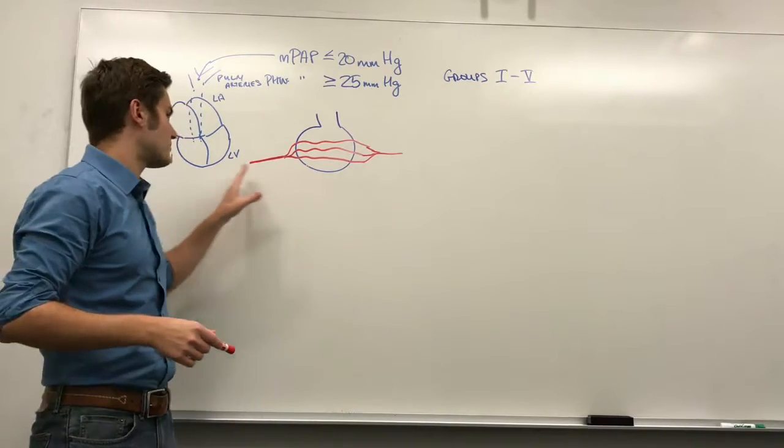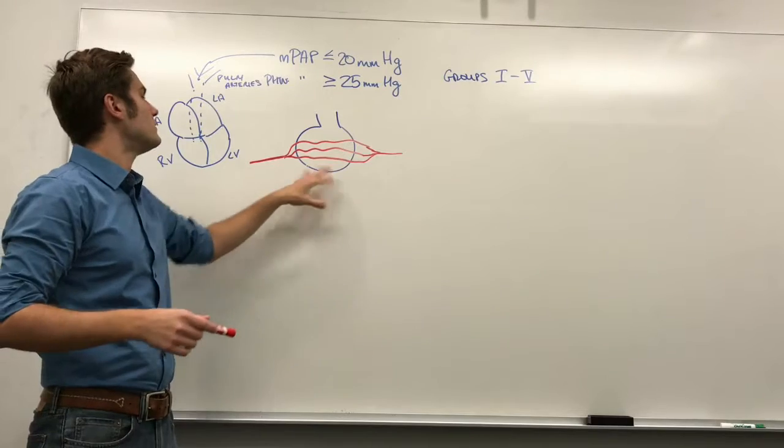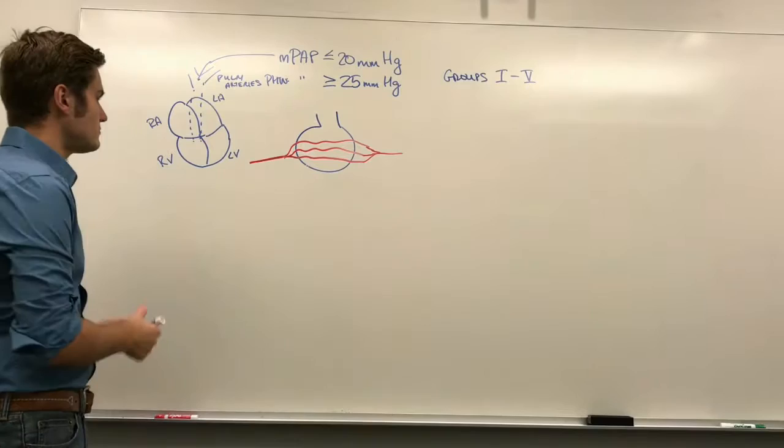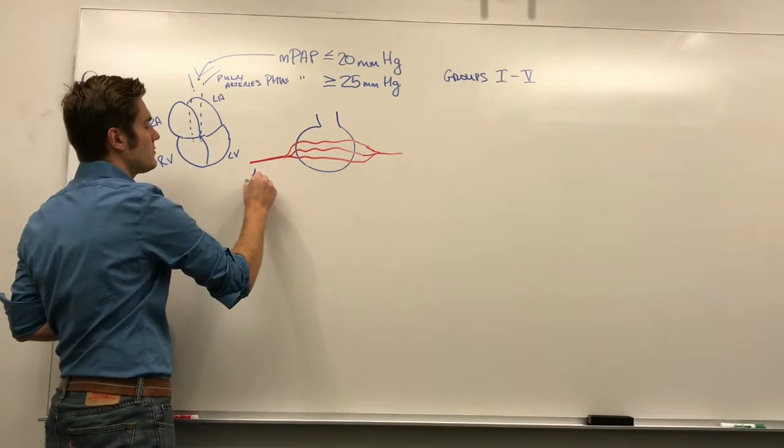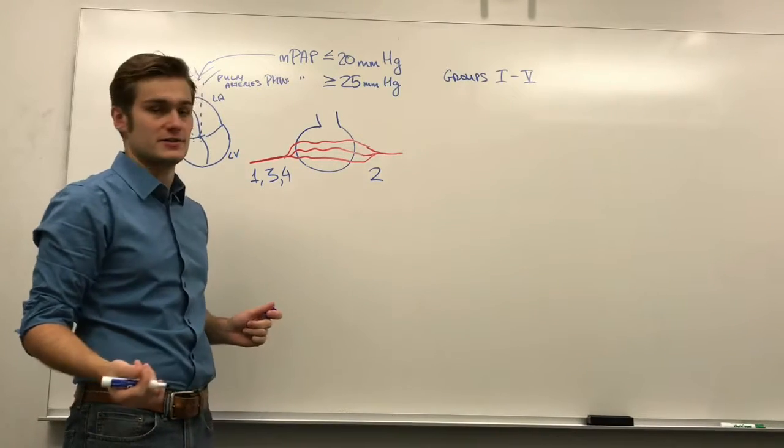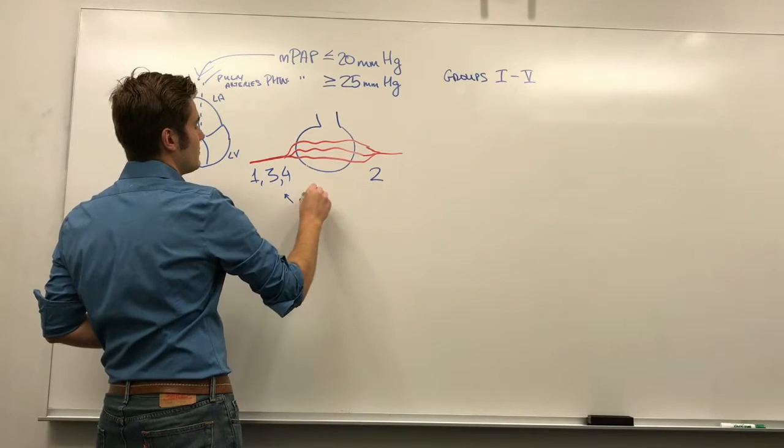There's gas exchange between the air and the alveolus and the blood in the capillaries. So, the different groups of pulmonary hypertension kind of go along each spot here. The pre-capillary etiologies are going to be groups 1, 3, and 4. And post-capillary is going to be group 2. Group 5 kind of can be anywhere.